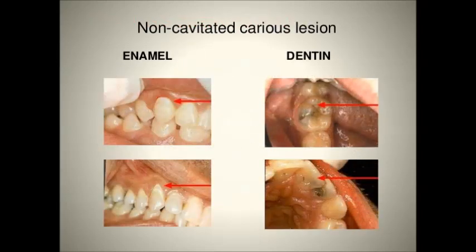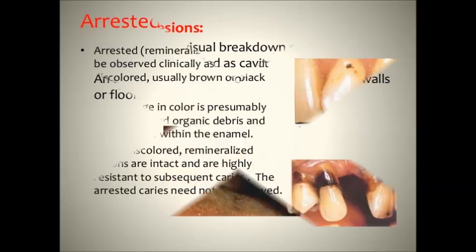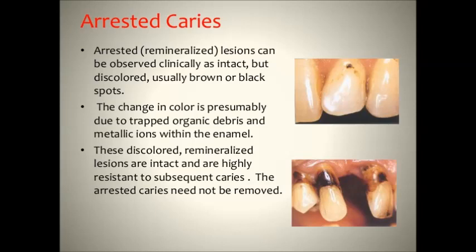Non-cavitated lesions are mainly present at the gingival margin where plaque accumulates. In the cavitated lesion, there is a visual breakdown of the tooth surface. An active cavity on the smooth surface has soft walls and floors. Arrested caries lesions are observed clinically as intact but discolored, usually black or brown spots. The change in color may be due to trapped organic debris and metallic ions within the enamel. These discolored remineralized lesions are intact and highly resistant to subsequent caries, so arrested caries do not need to be removed.